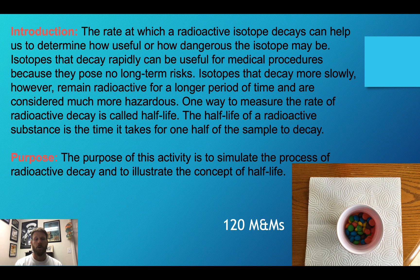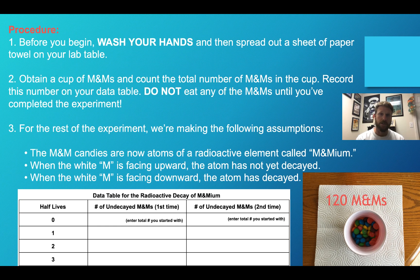The whole point of this activity is to simulate that process and show you the concept of half-lives. We're going to start with 120 M&Ms. We're going to make some assumptions about these M&Ms — we're going to be creative and call these M&Ms 'M&M-em.' That's our radioactive element.